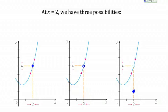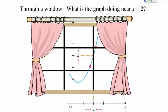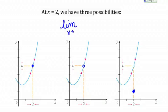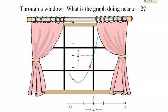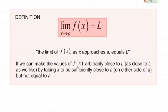What we've done by saying it looks like it ought to be at 4 — even though we don't really know exactly what's happening at 2 because there's this bar in the way — is we've found the limit as X goes to 2 of our function is 4. The limit of F of X as X approaches 2 equals 4 means that we can make our function value, our Y value, as close as we want to 4 by taking X as close as we want to 2.